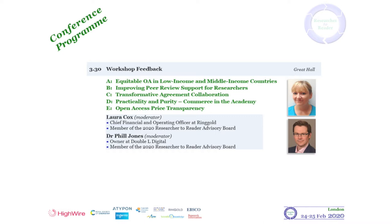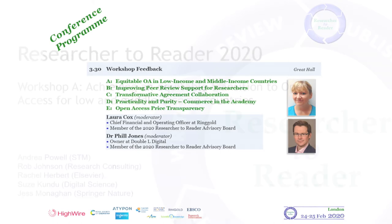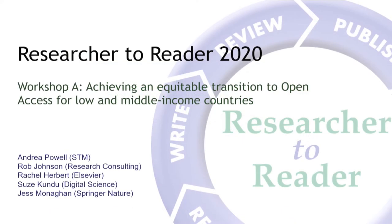This is the stage at the conference where we bring the workshop rapporteurs up to the stage to talk about what they discovered and what the outcomes of their workshops were. We're going to go in simple order. The first workshop is on equitable OA in low income and middle income countries, run by Rob Johnson and Andrea Powell. The reporter is Jess Monaghan from Springer Nature.